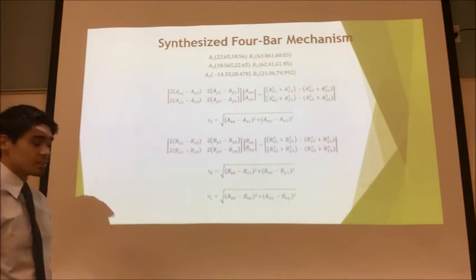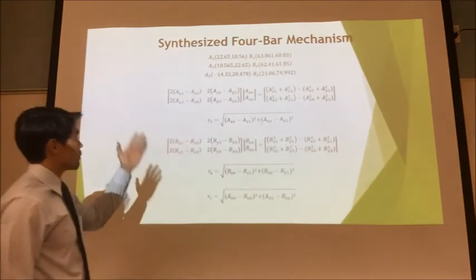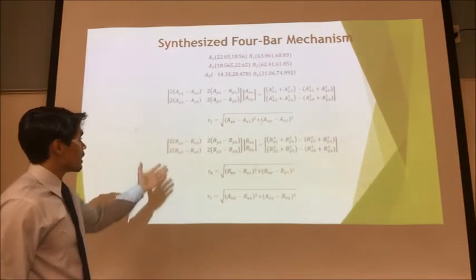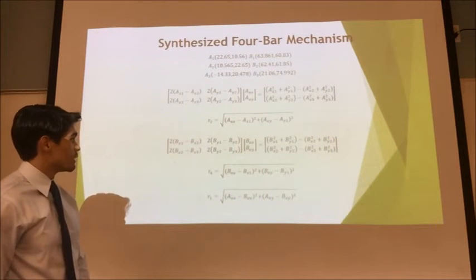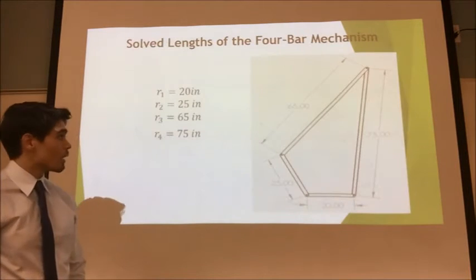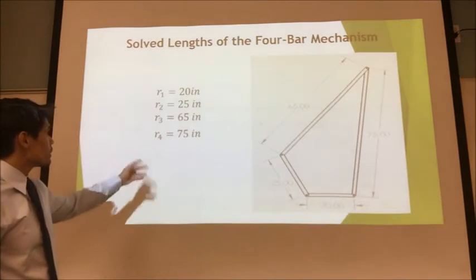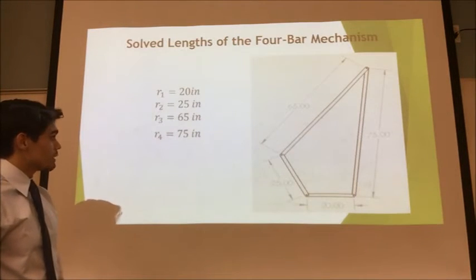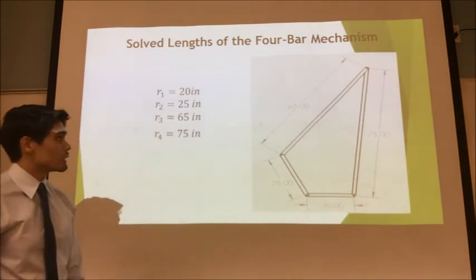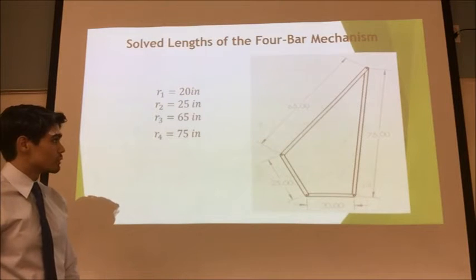So we had to synthesize a four-bar mechanism, and we were given three positions of the coupler, and then we applied the equations to find the ground links and the lengths of each of the links. These were the results of the lengths of the links, and here is a sketch of the four-bar with each of the links described.